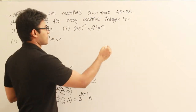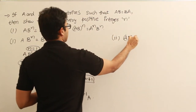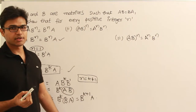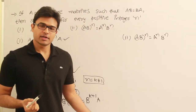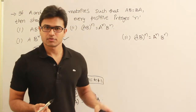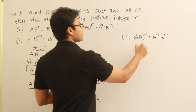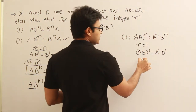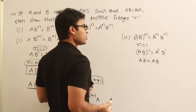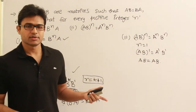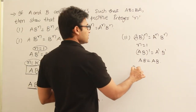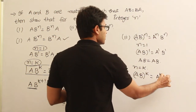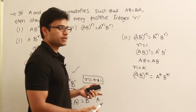Now let us do the second one: A into B power n is equal to A power n into B power n. We shall prove it using induction, the same rules. First, for n equal to 1, A into B power 1 equals A power 1 into B power 1, which gives AB equals AB — true. Now we assume it is true for n equal to K, meaning AB power K equals A power K into B power K.